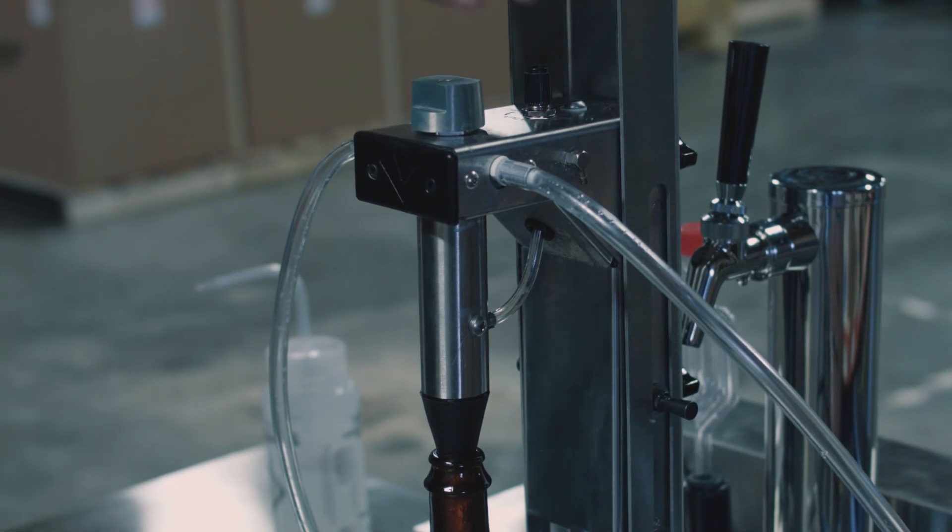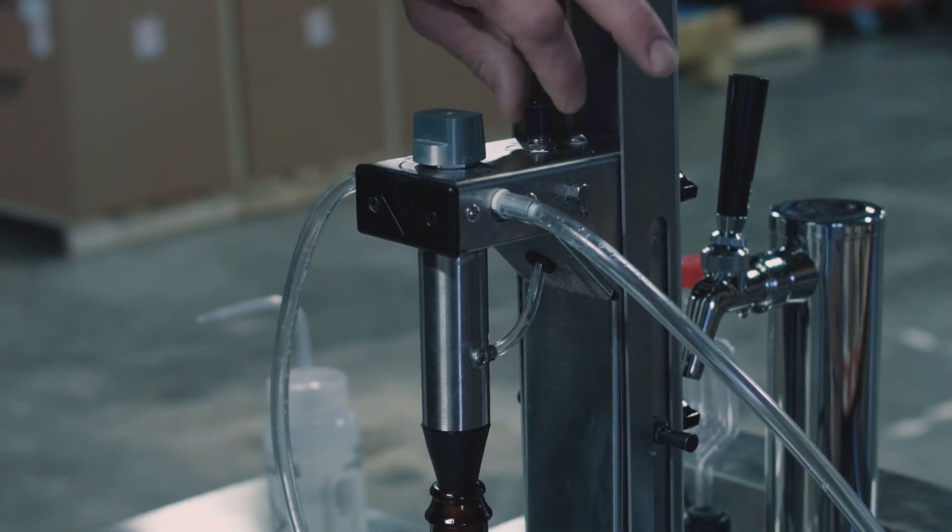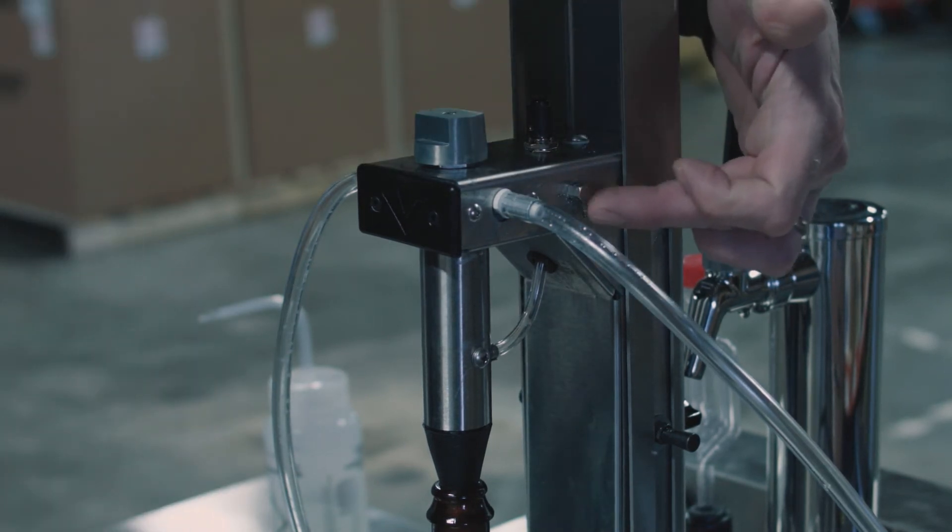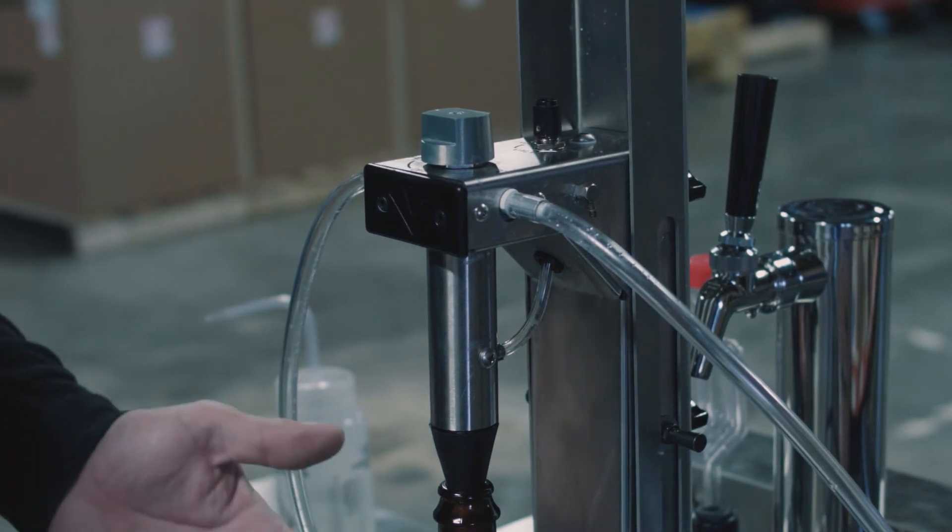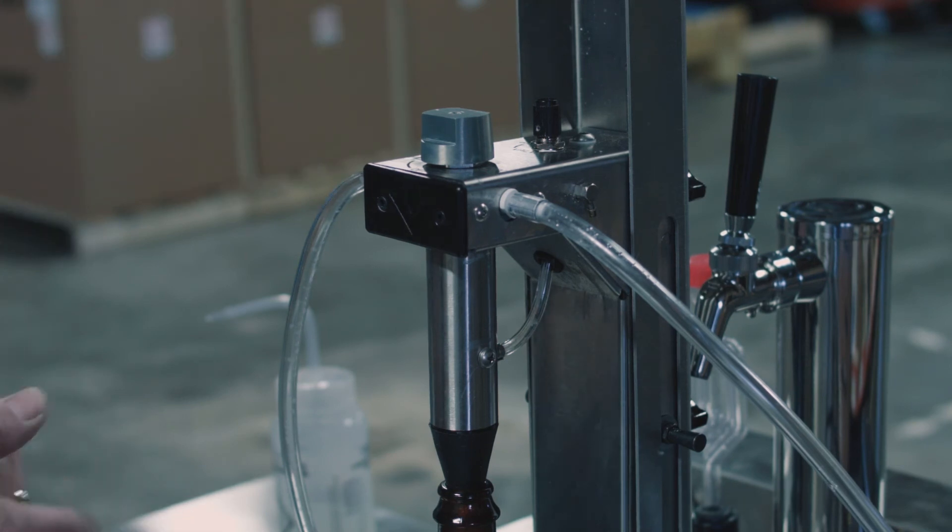The next thing we want to do is open that flow control valve just a little bit, so you back up about maybe a quarter turn, and you should hear gas escaping out of this. Do that for about five seconds. That means we're purging the air that was inside the bottle with CO2.